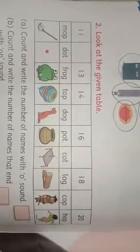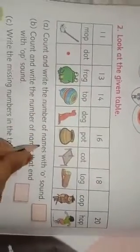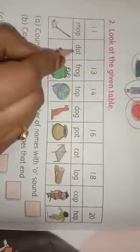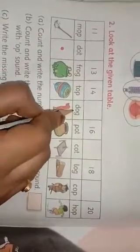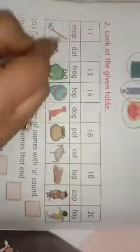Look at the given table. In this table, we count the number of O sound words. M-O-P mop, D-O-T dot, F-R-O-G frog, T-O-P top, D-O-G dog, P-O-T pot, C-O-T cot, L-O-G log, C-O-P cop, and H-O-P hop. These are all O sound words. How many are they? We count.